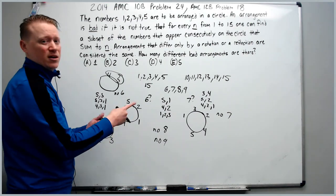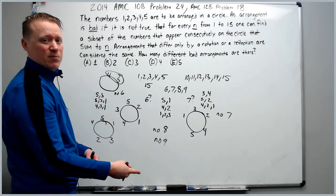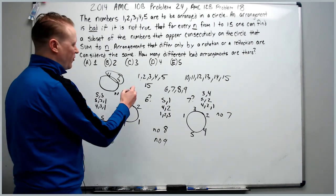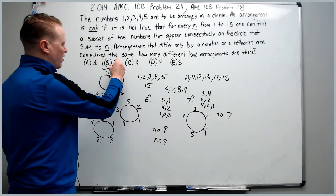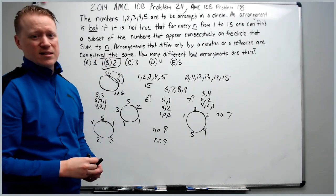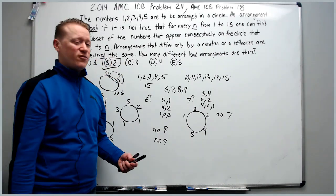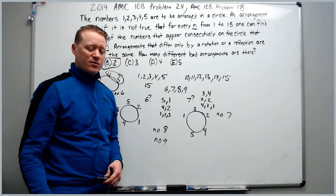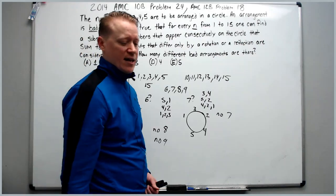By similar reasoning, targeting no 9 is equivalent to targeting no 6, because if you had a consecutive subset summing to 6, the remaining numbers would sum to 9. Therefore there are only two distinct bad arrangements total. If you like this video, please subscribe, and I'll see you in the next clip.